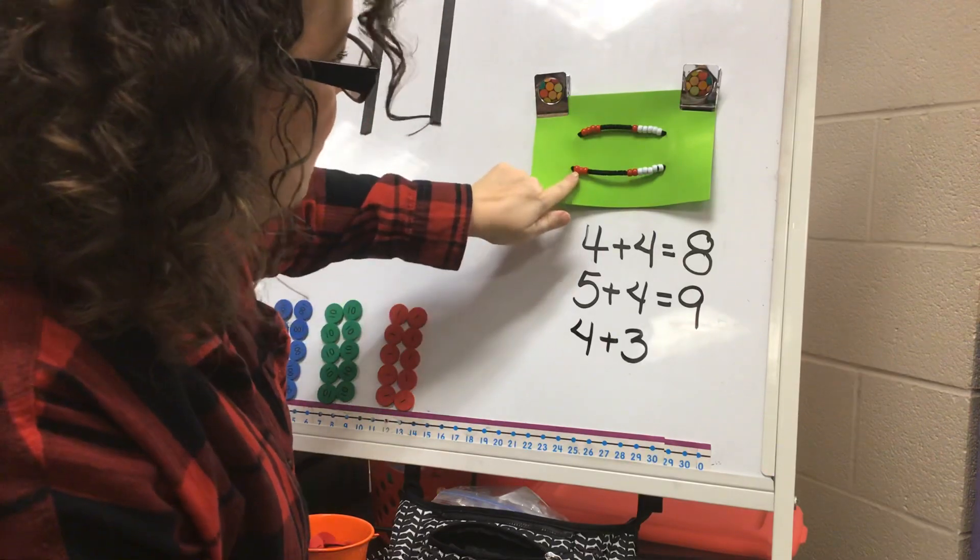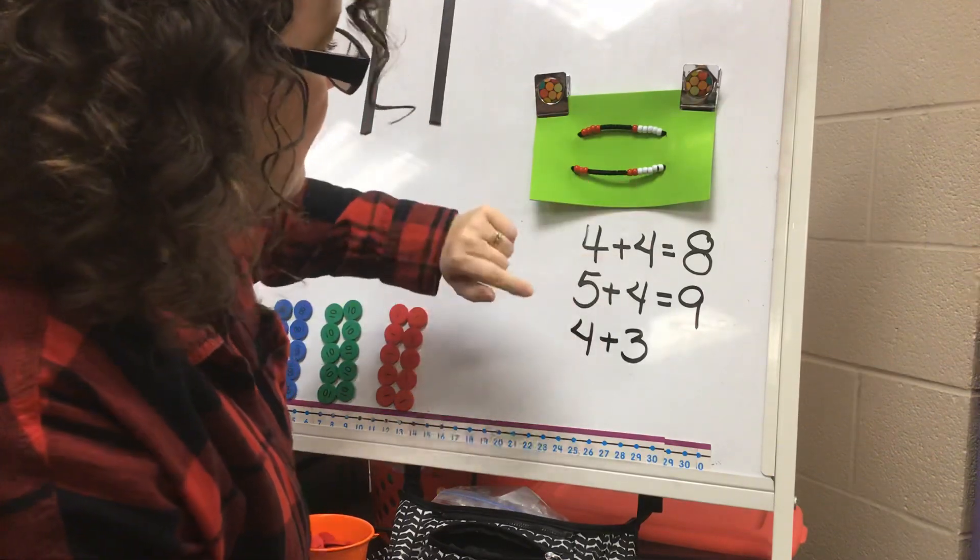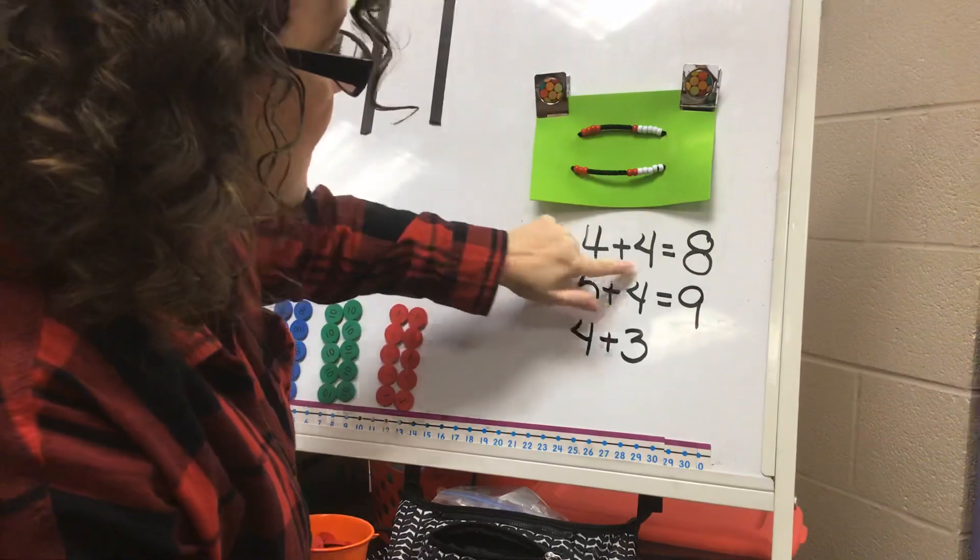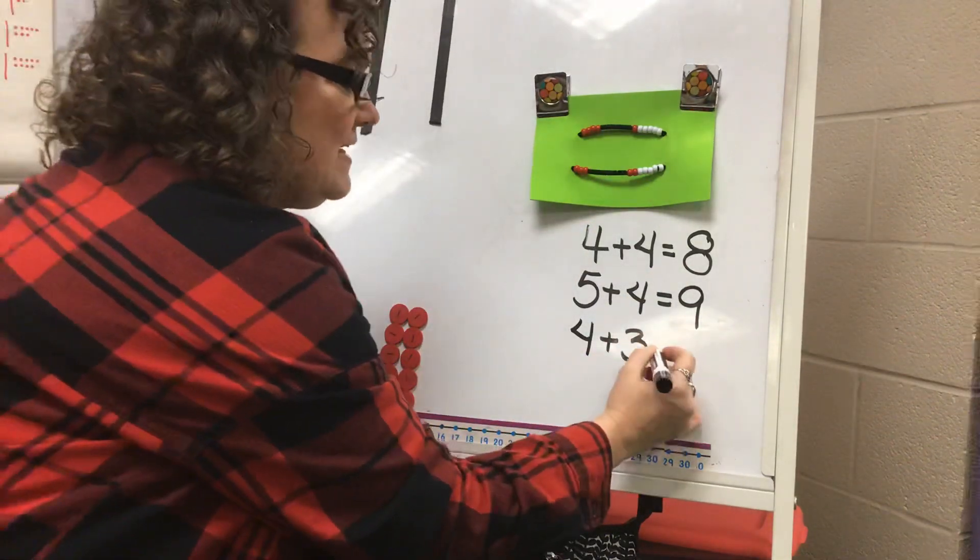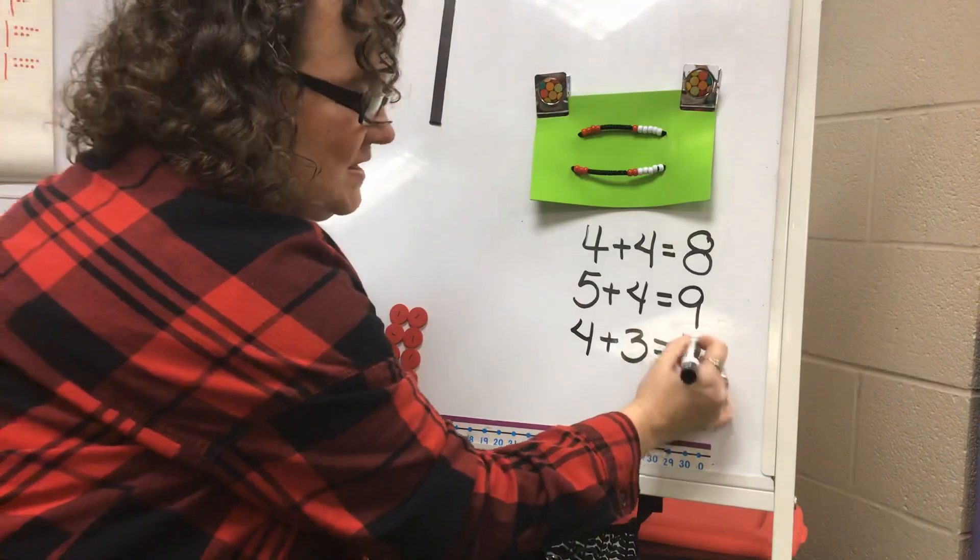So this one is one less. If I know four plus four is eight, then one less would be—did you say seven? Four plus three is seven.